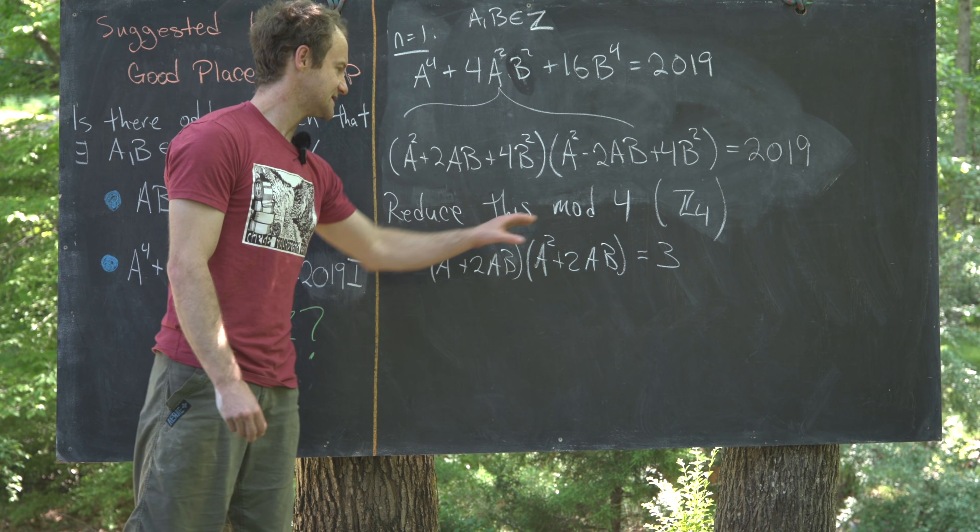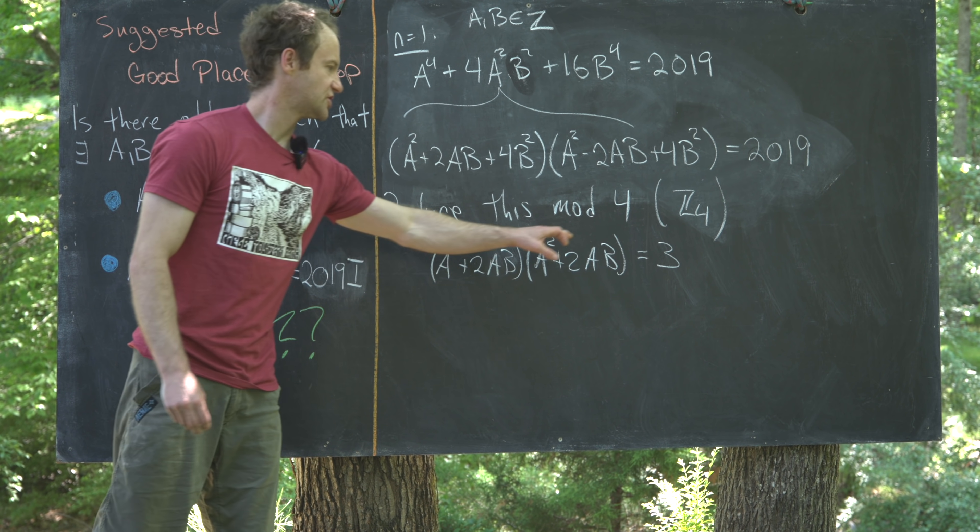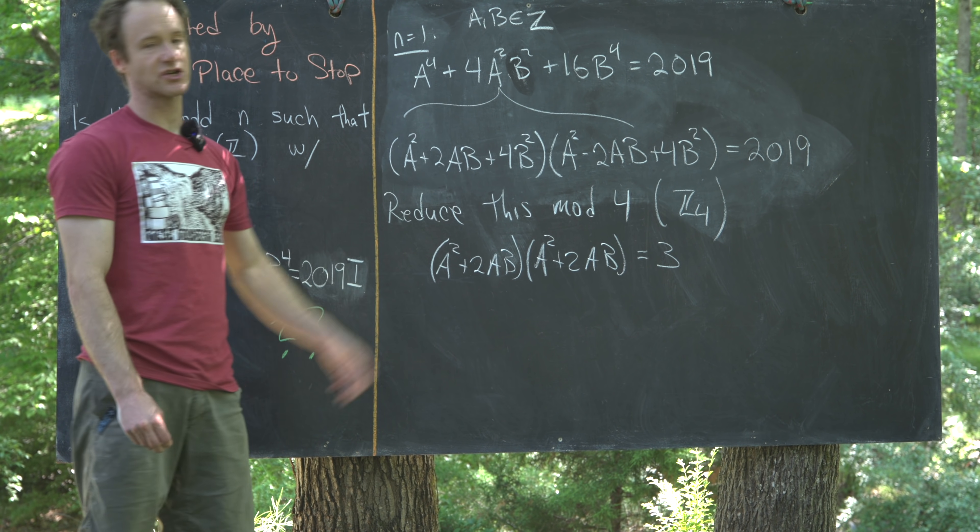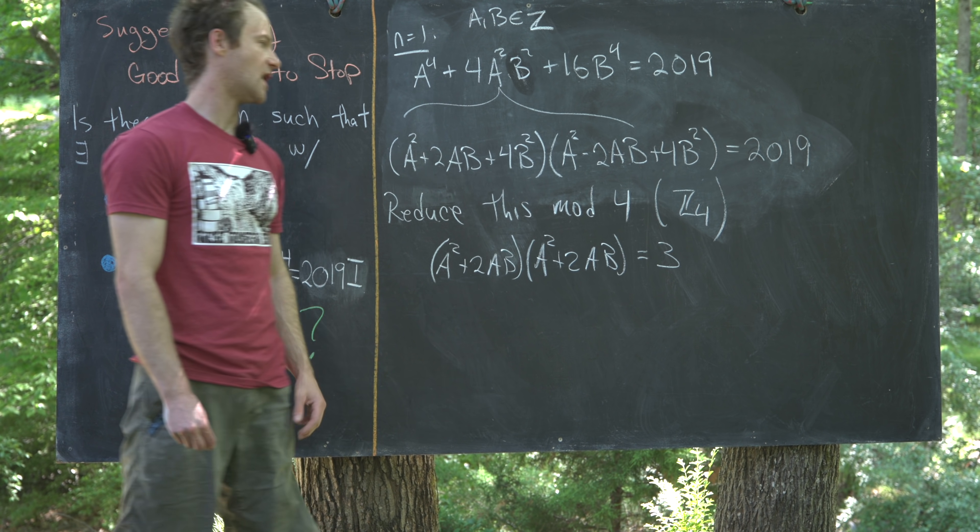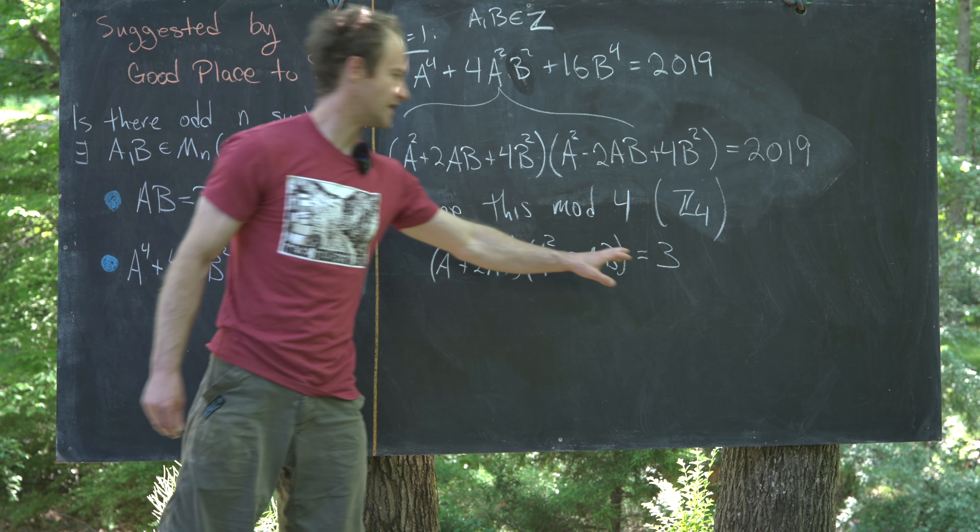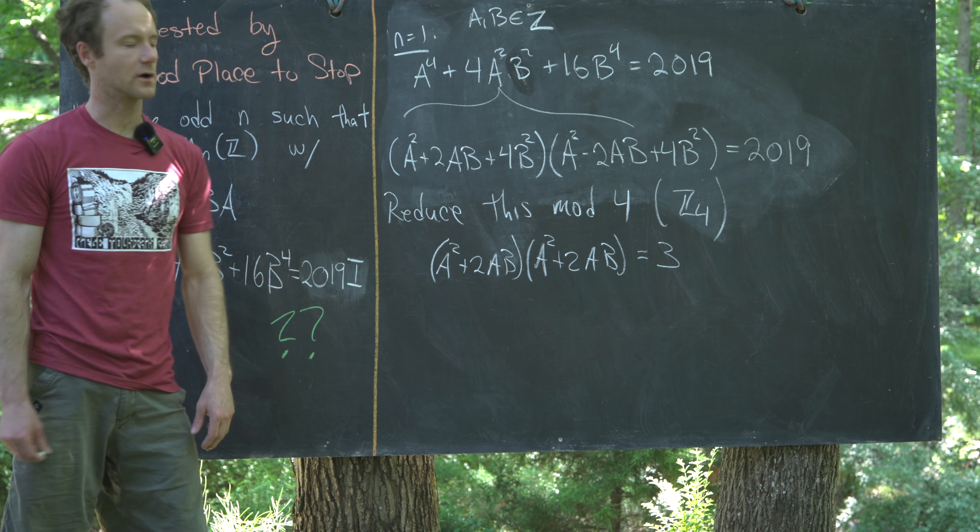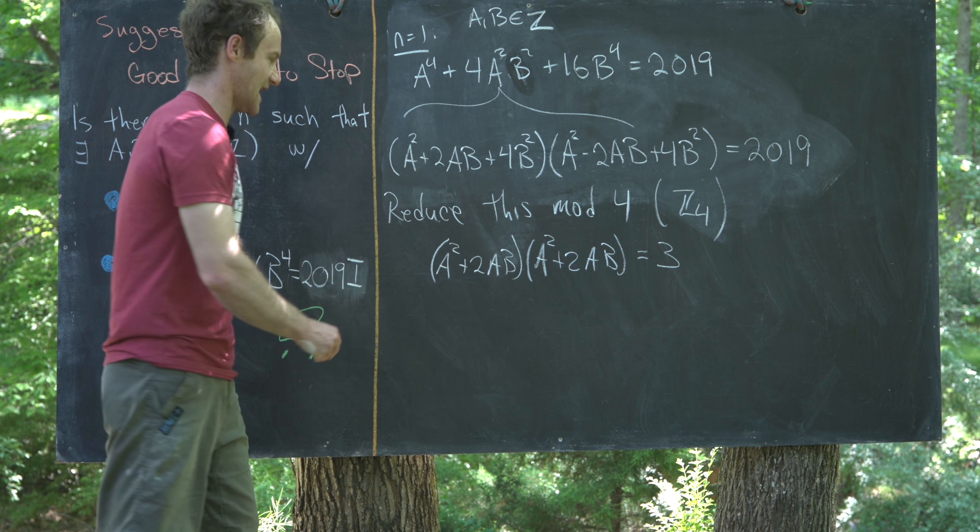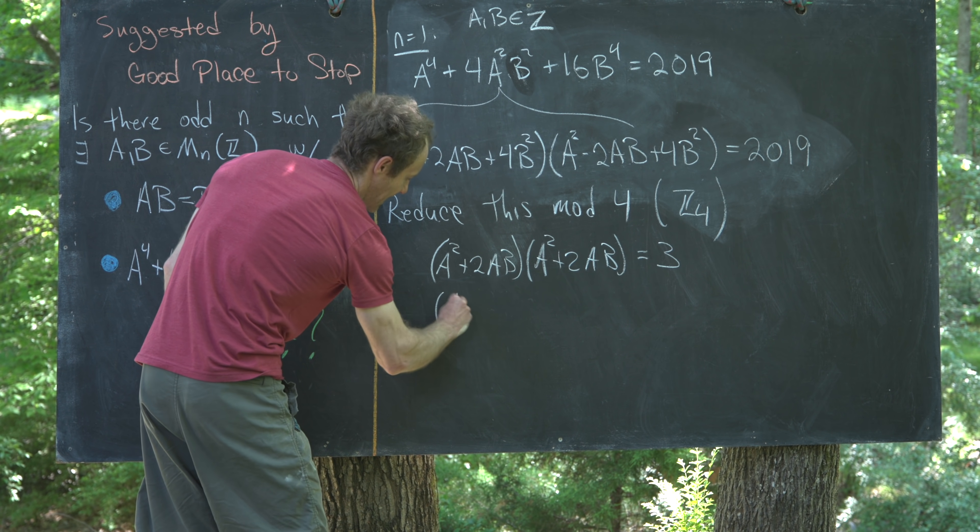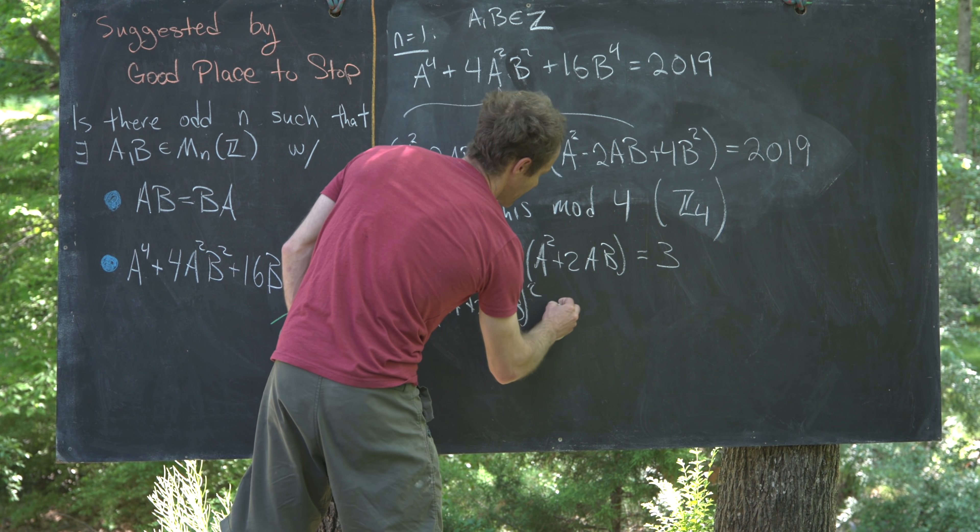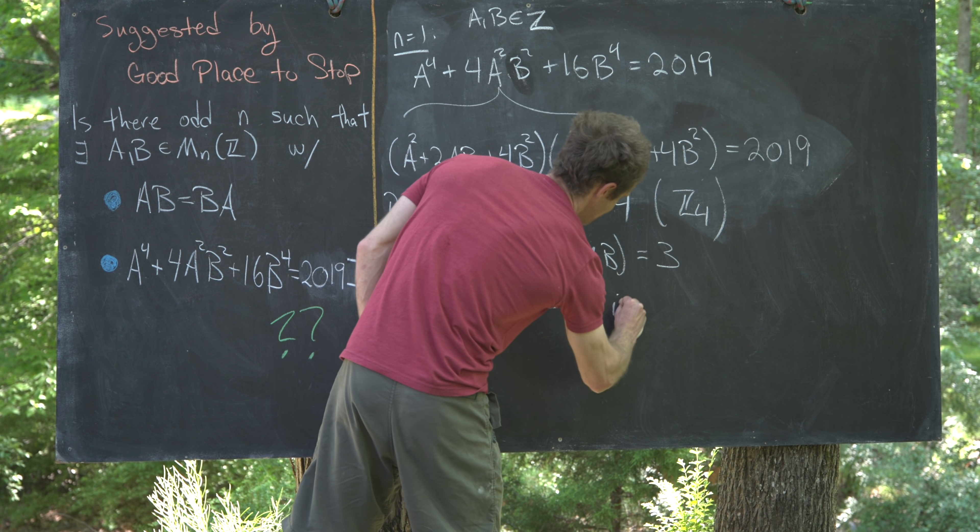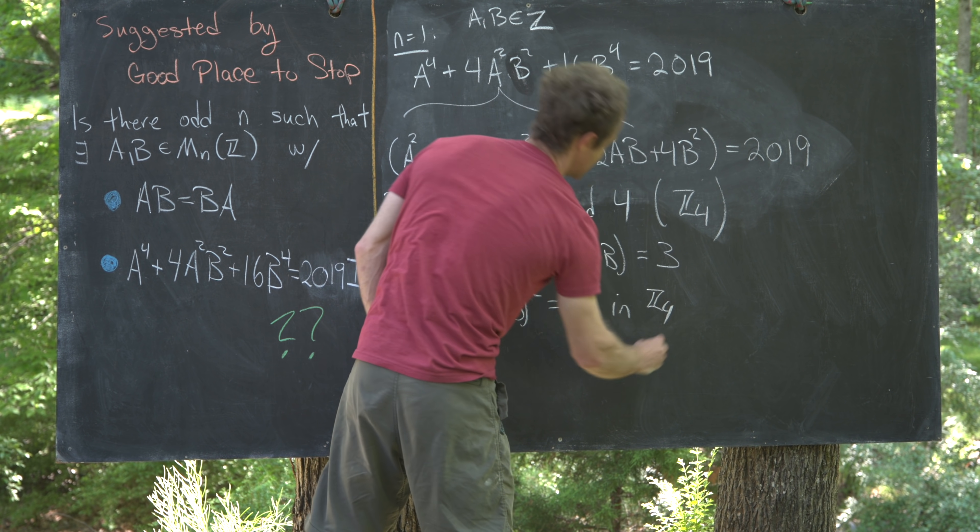So, like I said, in Z4, these two are the obvious reductions of the left-hand side and the right-hand side. If you want to write this as congruent mod 4, you would just have another line here and then a mod 4. But now notice that these two are the same, which means we have a squared plus 2ab squared is equal to 3. And like I said, this is in Z4.